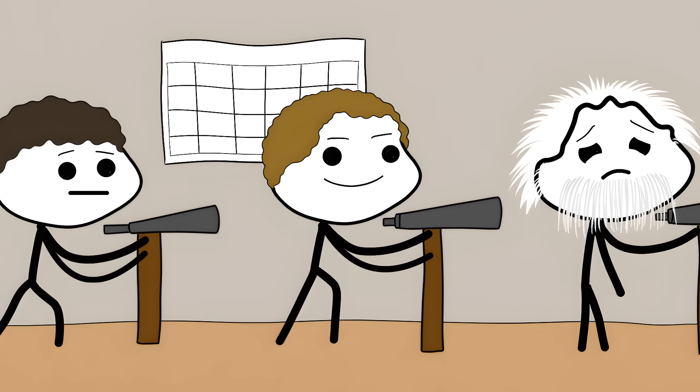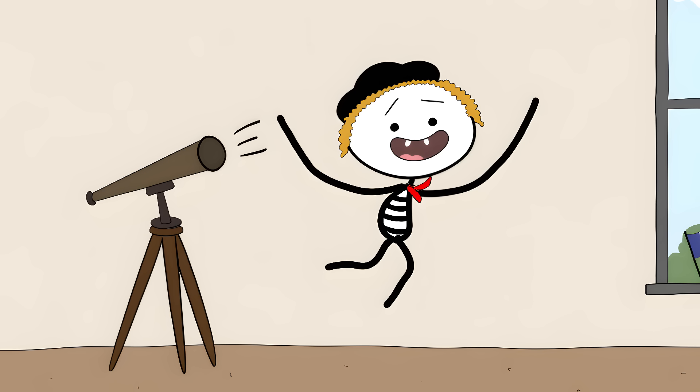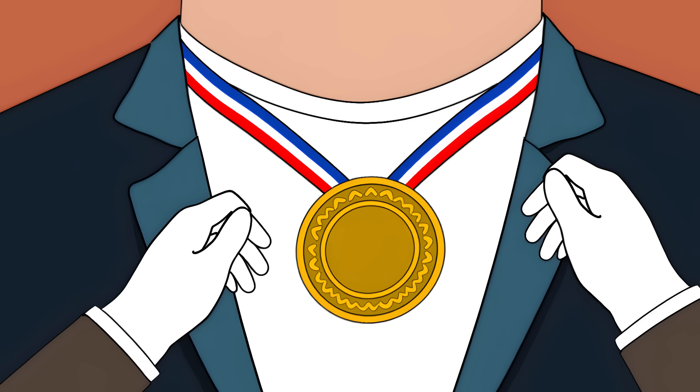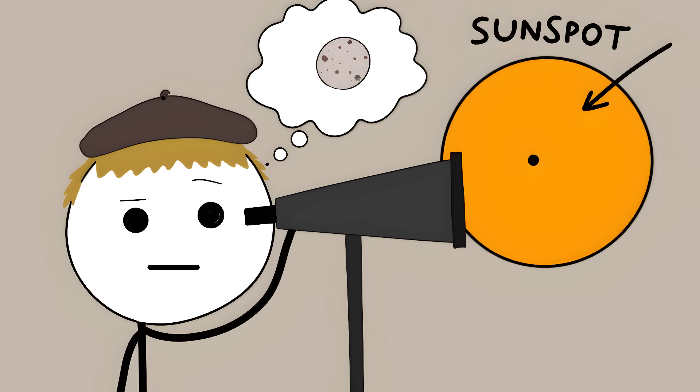Scientists spent decades looking for this ghost planet between Mercury and the Sun. One French astronomer even claimed he saw it crossing in front of the Sun. He got France's highest honor for this discovery. But he was probably looking at a sunspot.